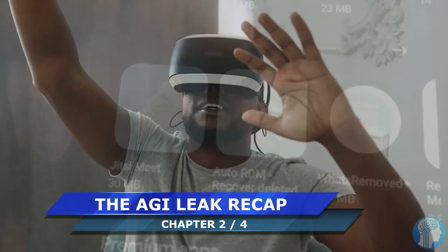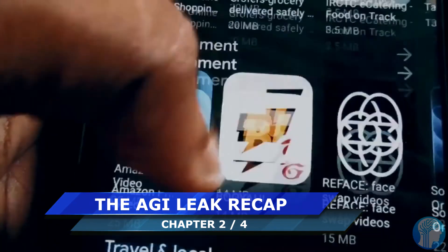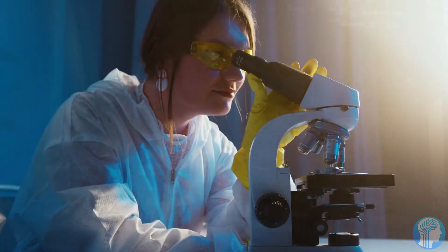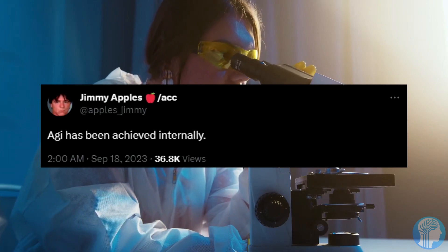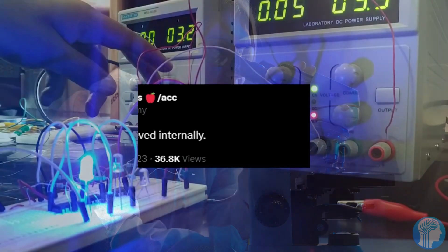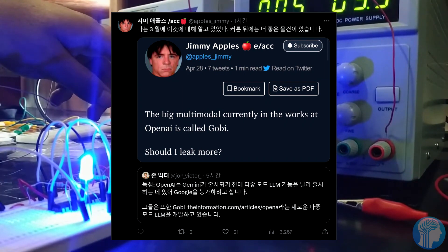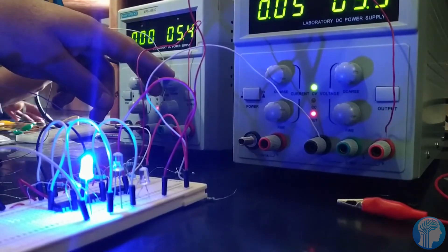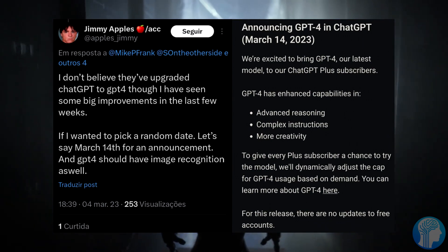Let's dig into this fascinating revelation. Just a few days ago, Jimmy Apples sent shockwaves through the tech community when he claimed that an AI research lab had successfully created an artificial general intelligence internally. This isn't Jimmy's first rodeo in the leak game. He's had a track record of nailing predictions, including the accurate unveiling of GPT-4. But here's where it gets interesting.